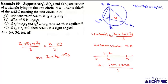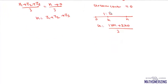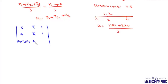So the orthocentre is Z1 + Z2 + Z3, which is option A. Now for option B, E is given by -Z2Z3/Z1. Let E be Z4. We know H = Z1 + Z2 + Z3. The equation of line AD is given by the determinant with rows (Z, Z̄, 1), (Z1, Z̄1, 1), and (Z1 + Z2 + Z3, Z̄1 + Z̄3, 1) equal to 0.